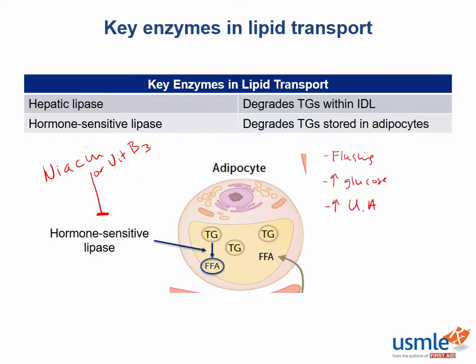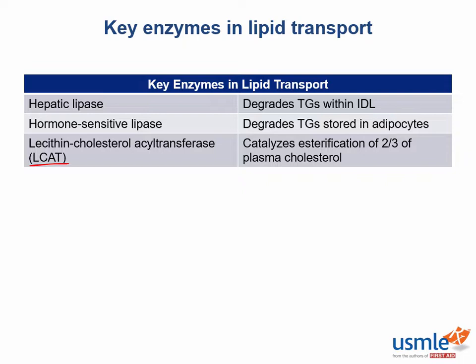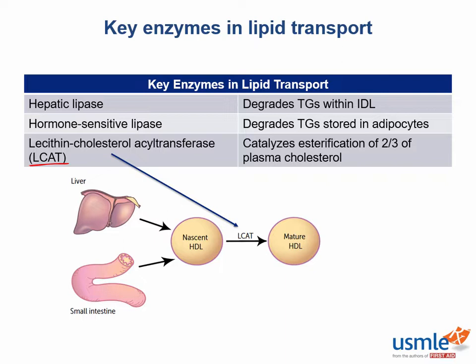Next up we have lecithin cholesterol acyltransferase, or LCAT for short. LCAT is involved in the esterification of cholesterol, which allows cholesterol to enter the core of lipoproteins where it can be stored for transport. LCAT is involved in about two thirds of the cholesterol esterification process for plasma cholesterol. This enzyme is also required to get cholesterol into HDL to make a mature HDL molecule. HDL that is not loaded with cholesterol travels from the liver, meets LCAT, and then loads up with cholesterol.